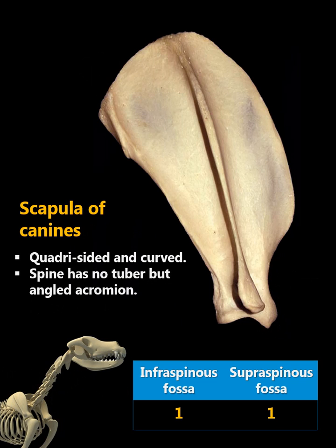In dog, the scapula is quadrilateral and curved. The sizes of the supra-spinous fossa and infra-spinous fossa are almost equal. The spine of the scapula has no tuber but has an angled acromion.